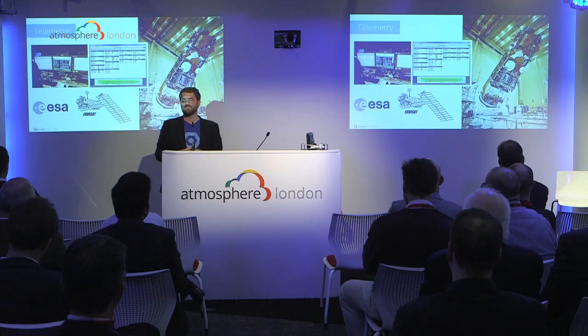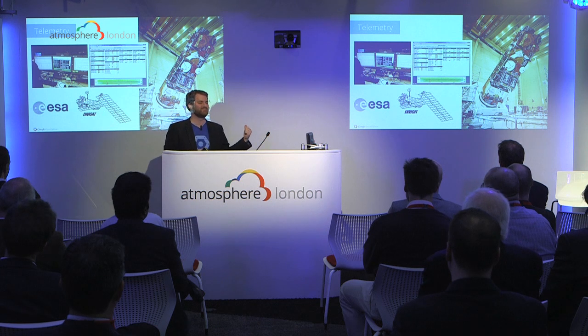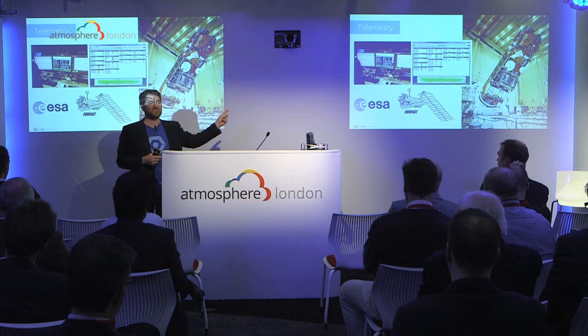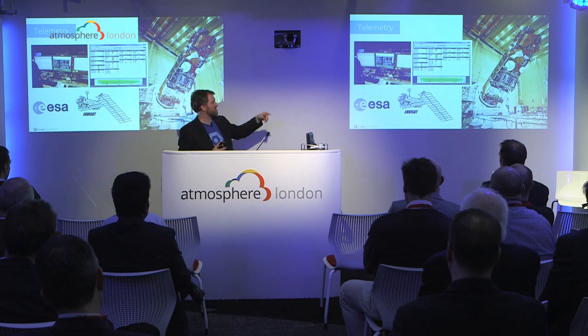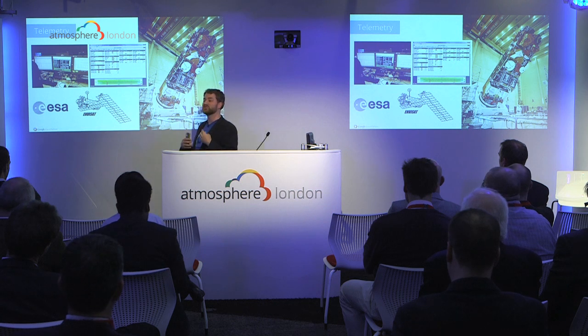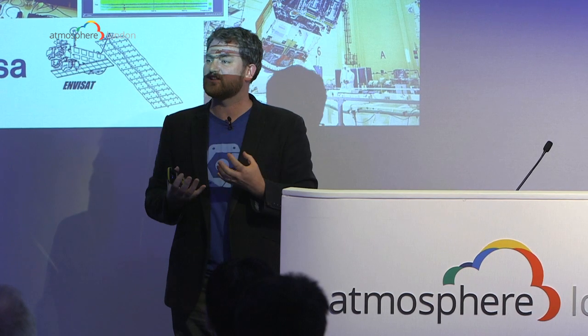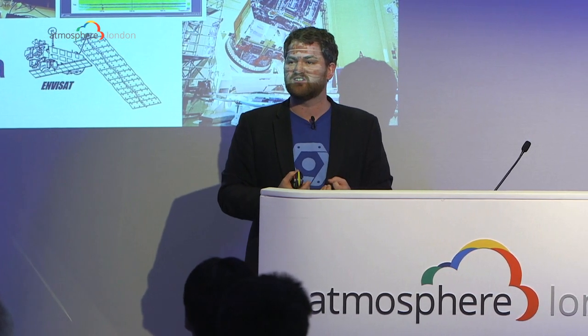Envisat was one of the biggest satellites they launched from a scientific perspective — about the size of a bus. These pictures show their mission control systems. They're launching a two to four hundred million pound piece of kit. If that thing goes wrong, who's going to fix it? You can't get anyone up there. So everything you're ever going to know about this incredibly valuable piece of kit you have to be able to measure. In a satellite mission control system you measure everything — what we call telemetry streams: temperatures, voltages, whether it's dark or hot.